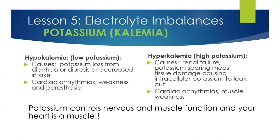Another electrolyte imbalance might be potassium, or kalemia. Hypokalemia would be low potassium; hyperkalemia would be high potassium. Hypokalemia or too low potassium presents as weakness, muscle twitching, and cardiac arrhythmias. It can be caused from potassium losses from diarrhea or diuresis. Remember that potassium controls nervous and muscle function — and your heart is a muscle. Cardiac arrhythmias are really important to watch with potassium.